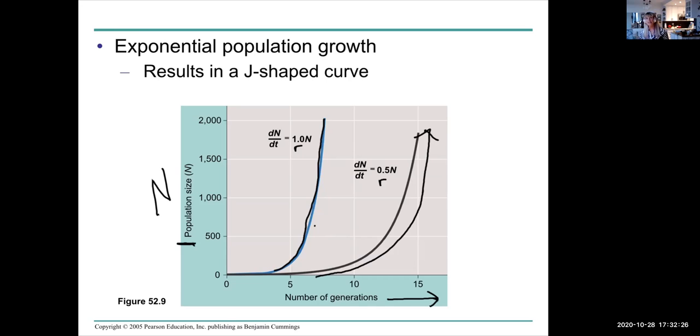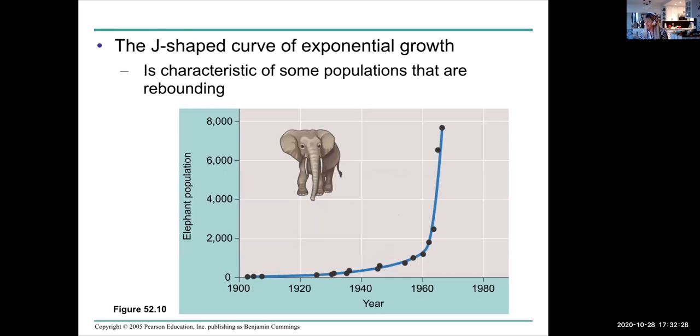Do populations exhibit exponential growth? Sometimes they do. A population, for example, might be rebounding. It might have been reduced for some reason, by some kind of weather event, a catastrophic event, possibly hunting or something like that. But if it's rebounding in an area where resources are unlimited, then it will show exponential growth. These are elephants.